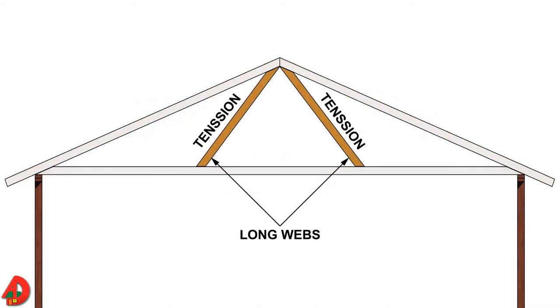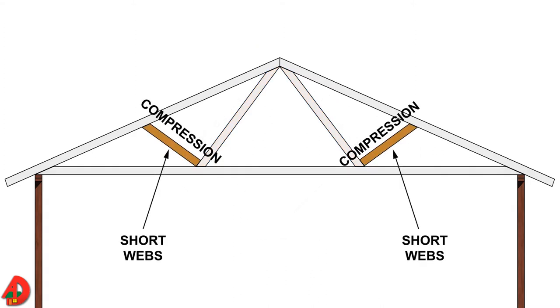Long webs are secured to peak of truss and also fastened to bottom cord. This gives bottom cord support at spans between exterior walls. Weight of bottom cord has a pulling effect on long webs, or in other words, they are in a state of tension. Short webs run from intermediate points of top cord to points of bottom cord. Short webs provide support to top cord.